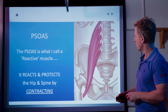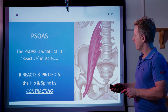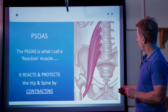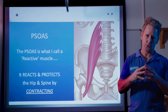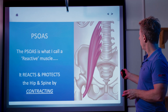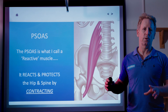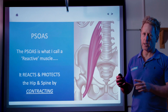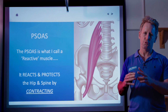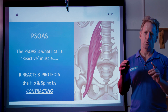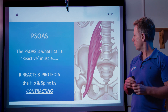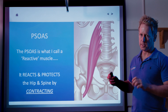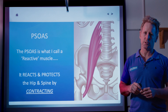I call the psoas a reactive muscle — it reacts and protects the hip and spine by contracting. If you have a problem with your hip joint, the psoas says it's going to protect you. The psoas tightens as a result of disc pathology or hip pathology. So if you stretch your psoas and nothing works, it's because it's trying to protect the structures it's designed to move — the hip and the spine. So be careful when you try to stretch it too much.